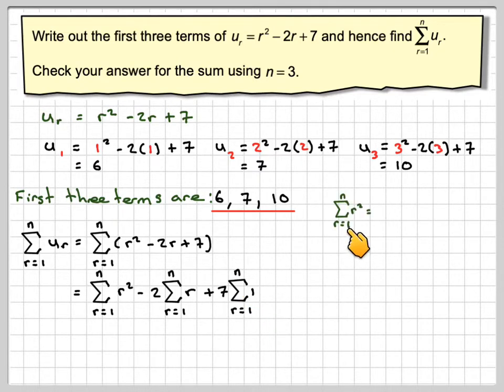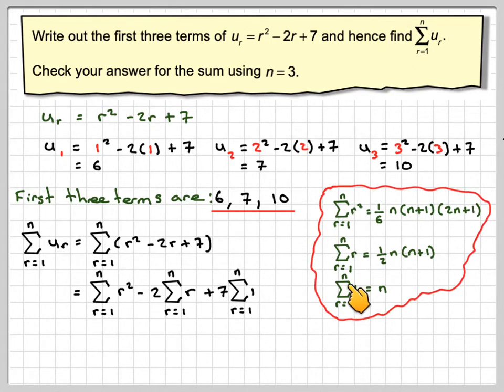Now there are some standard results. So the sum of the first set of squares can be written as 1 sixth n times n plus 1 times 2n plus 1. The sum of r from r equals 1 to n is 1 half n times n plus 1. We've come across that one before, this is the new one. And then the sum of 1 from r equals 1 to n will be n.